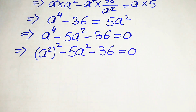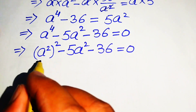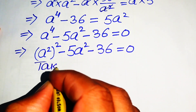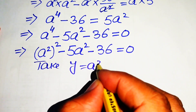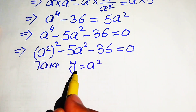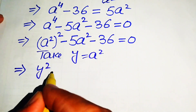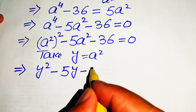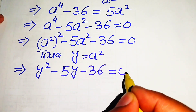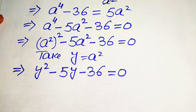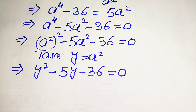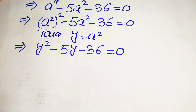To simplify, we substitute y = a². When we substitute this into the equation, it becomes y² - 5y - 36 = 0, which is a standard quadratic equation that we can solve by factoring.